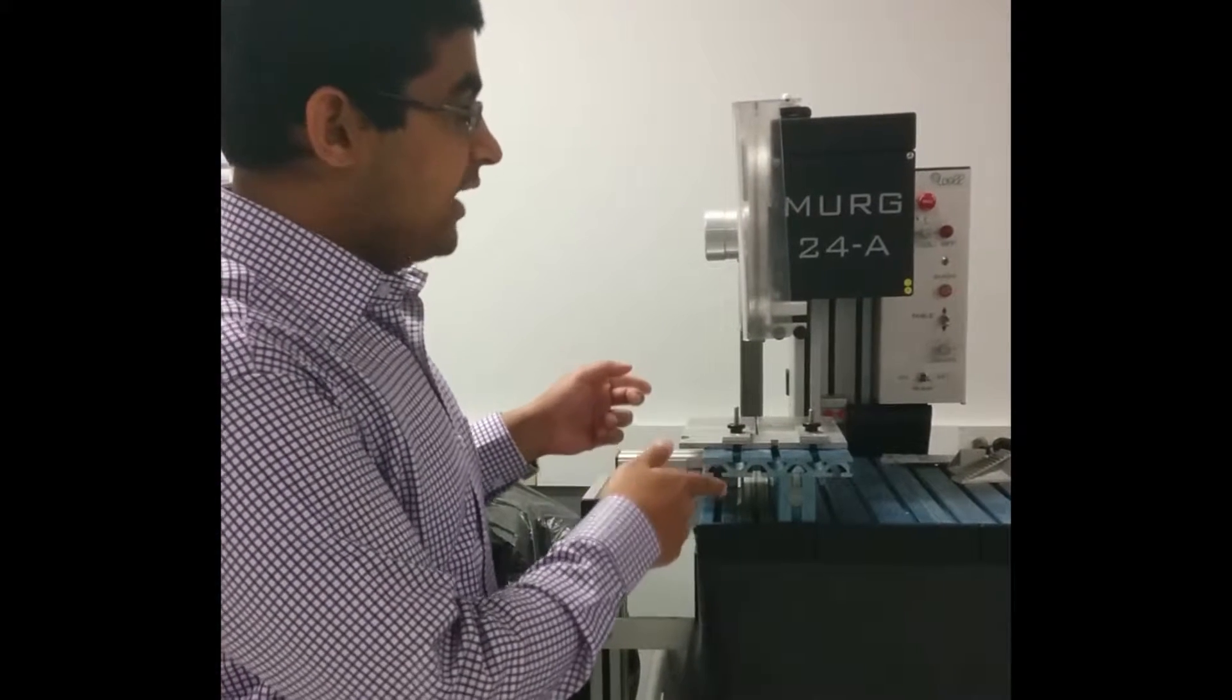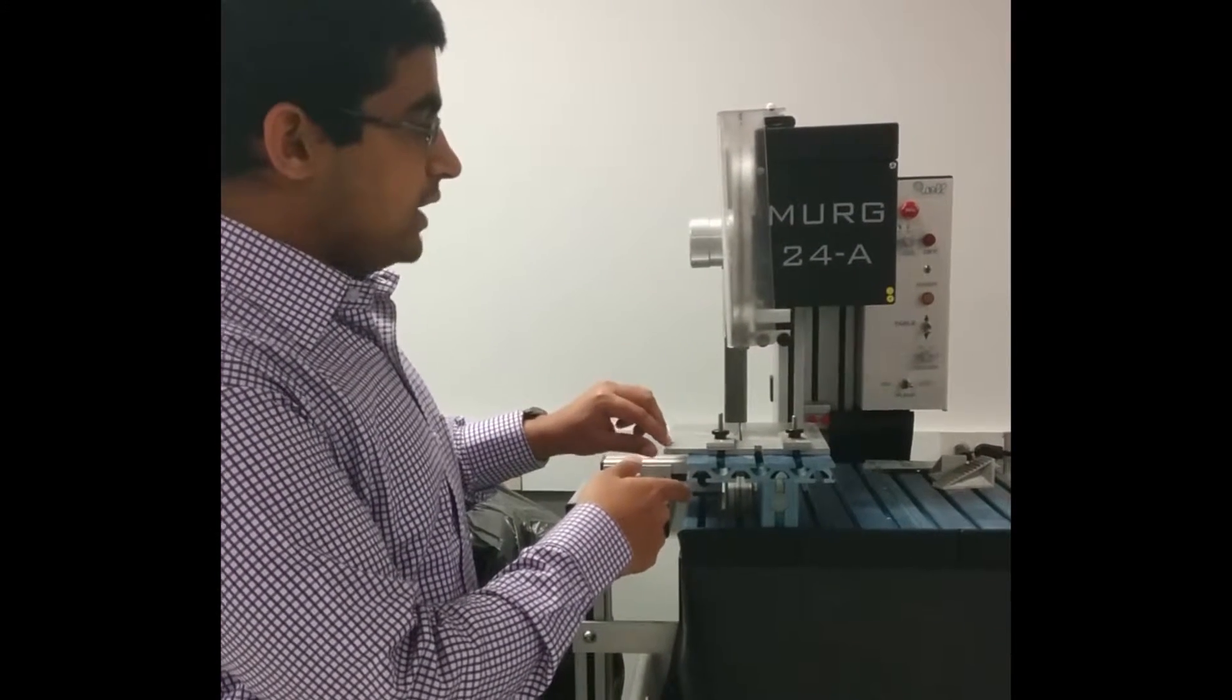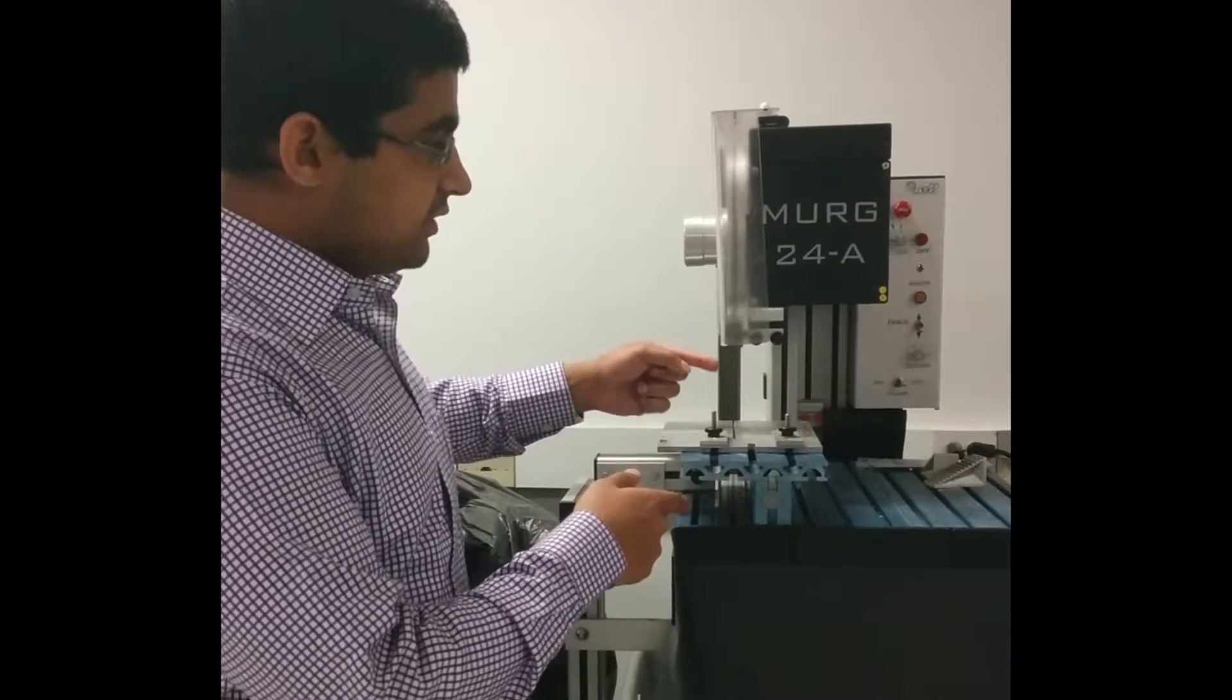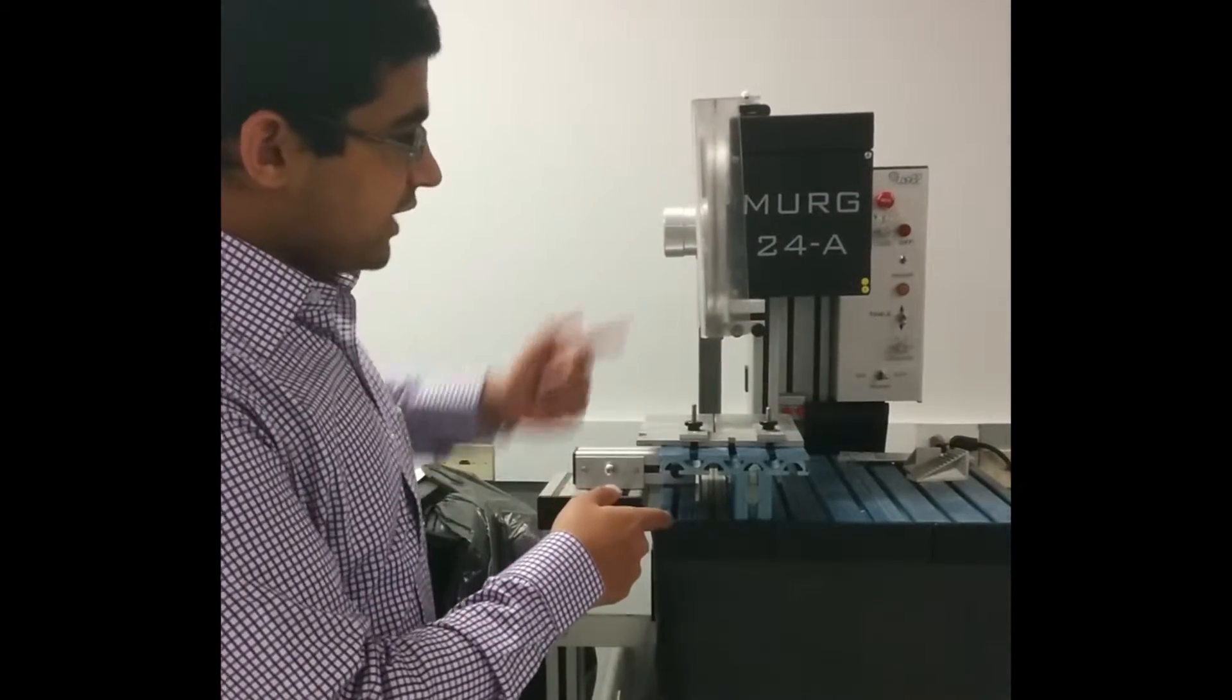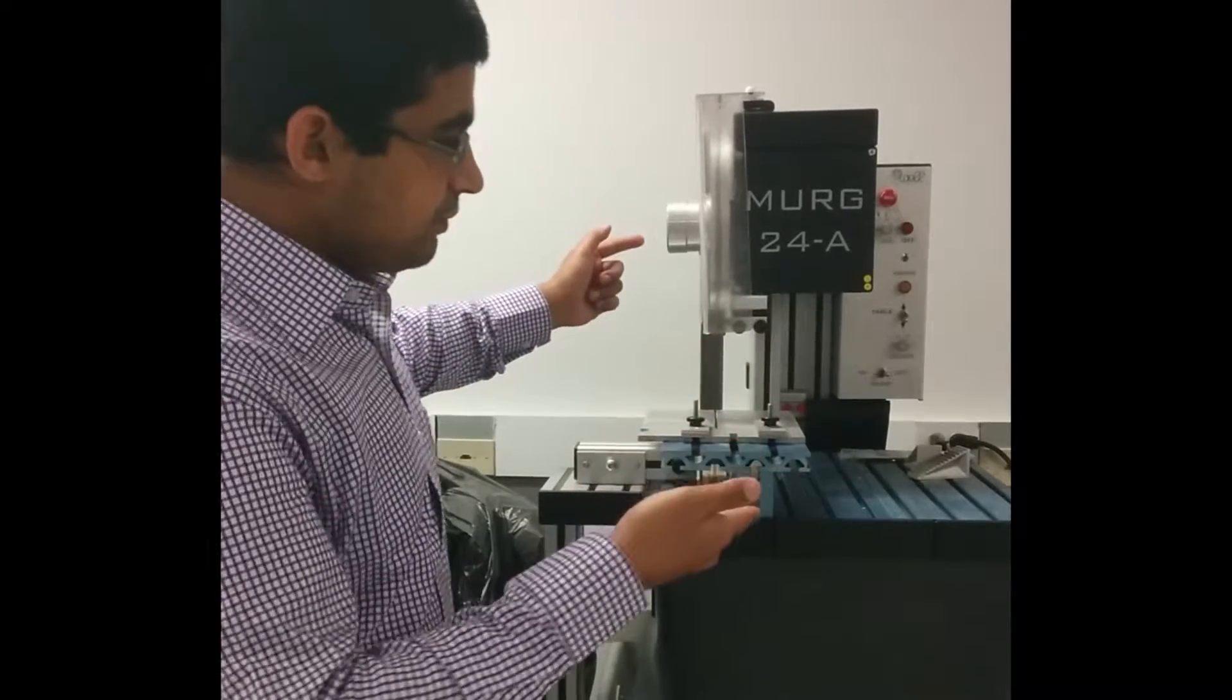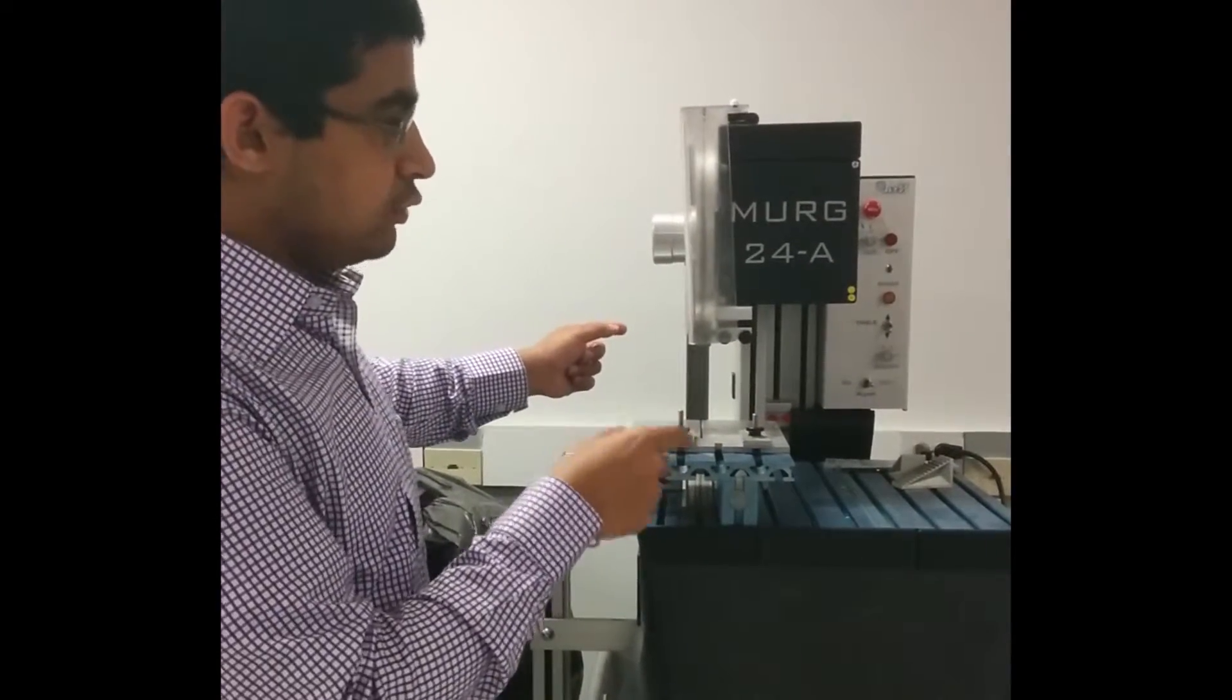This is a wire sawing machine. The ingot or brick to be cut is placed here. This is a wire going over two rollers from one side to another. As the table moves in this direction, the ingot is cut into pieces.